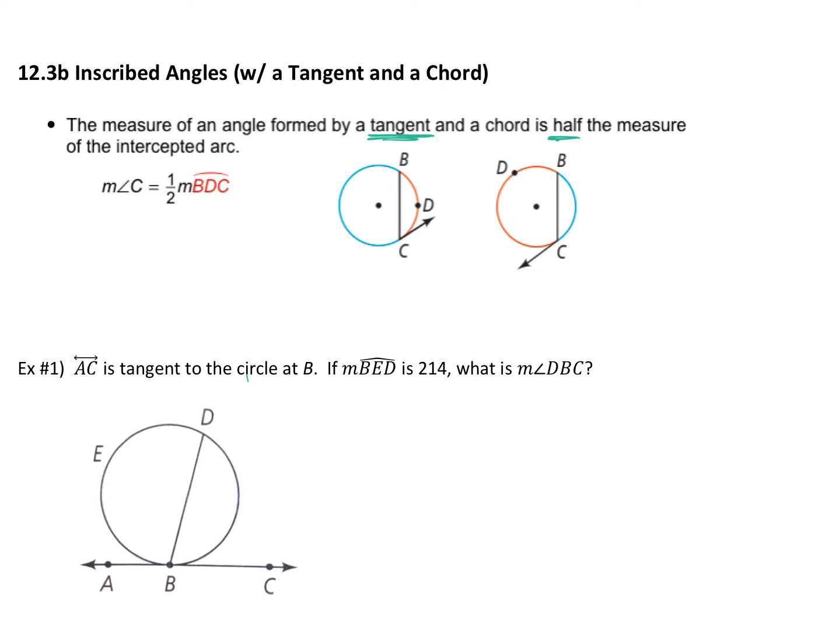This one says the measure of an angle formed by a tangent and a chord is half the measure of the intercepted arc. So yesterday we had a line here, and we said this angle is half of its intercepted arc. Today it's the same thing, but now one of those chords is not a chord anymore, it's a tangent.